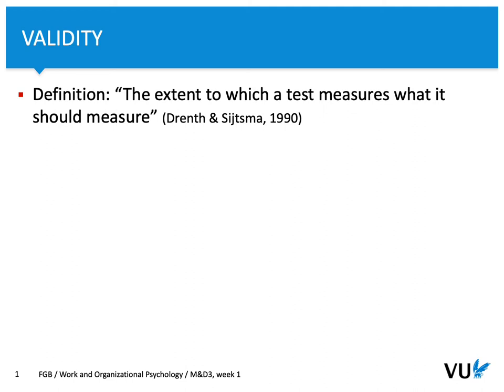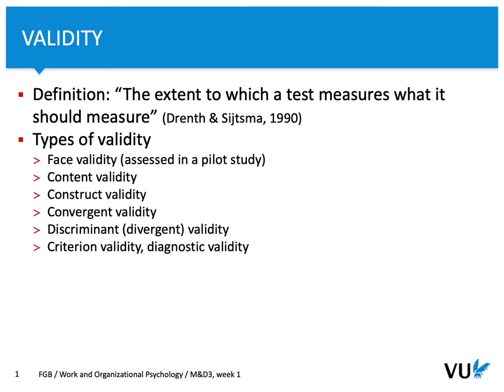It's a pretty vague definition of validity. So, to better understand validity itself, let's take a look at different types of validity. As you see here, we can indicate face validity, content validity, construct validity, convergent, discriminant, and many more.